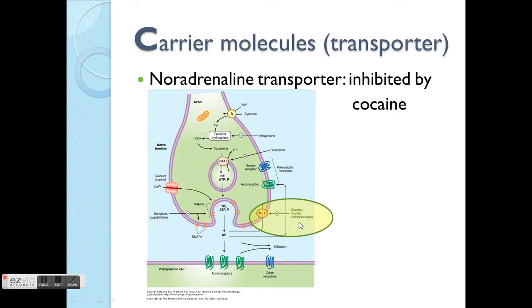This transporter is a target for cocaine, and also for tricyclic antidepressants. These compounds inhibit the NET, which prolongs the time and amount of NE in the synaptic cleft. This increases the stimulation of NE on those receptors.